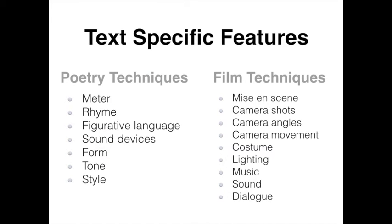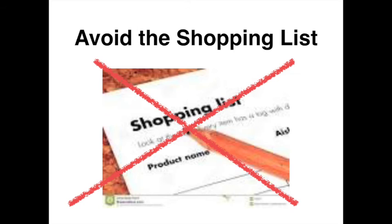It is essential that you know the specific features of your text types. When talking about Robert Frost's poetry, you need to be aware of meter, rhyme, figurative language, sound devices, form, tone, and style. When writing about Sean Penn's film Into the Wild, you need to understand mise en scène, camera shots, camera angles, camera movement, costume, lighting, music, sound, and dialogue. However, you need to avoid simply listing the techniques. It's not enough to recognise that Frost is using a metaphor — you have to explain how the use of that metaphor invites the responder to experience discovery.